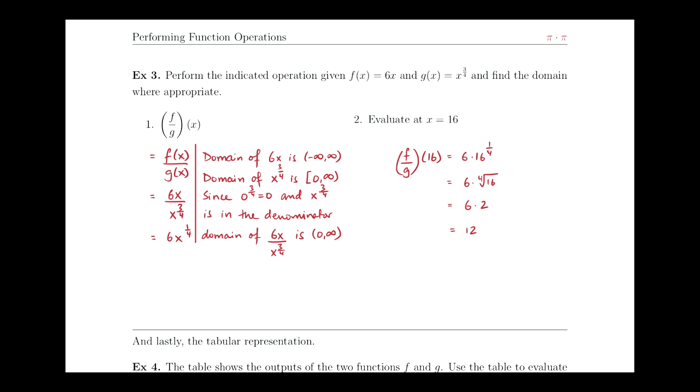And here we can use the quotient property of exponents to say, since bases are same and we're dividing the expressions, we can subtract the powers. So the power of x up top is 1, 1 minus 3 fourths is 1 fourth.